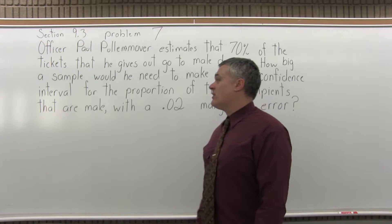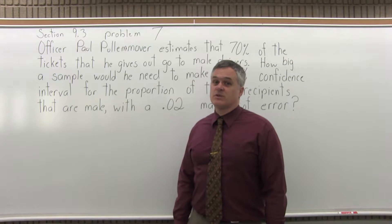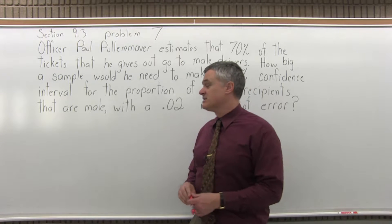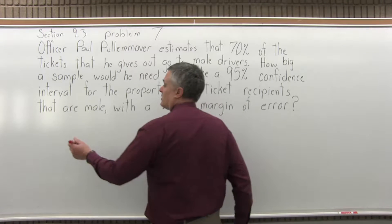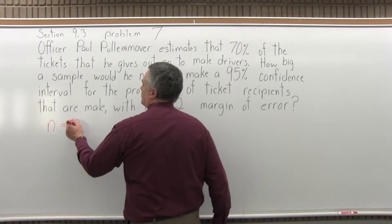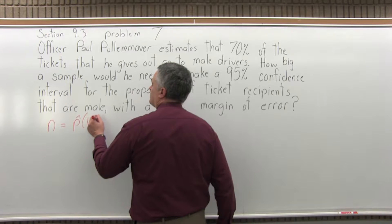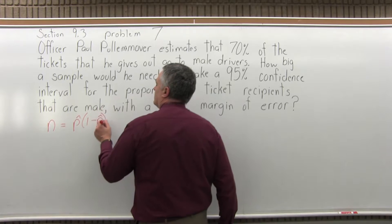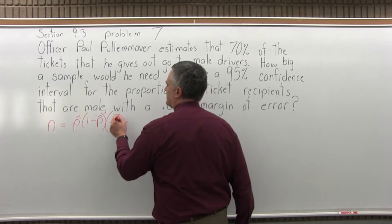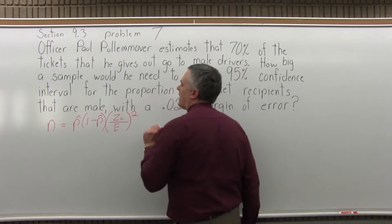This is a little different than the confidence interval questions we had been answering in this section. It's asking how big of a sample — determining the sample size. That's what it's looking for. There's a formula for that, which is n equals p-hat times 1 minus p-hat times z sub c over e, raised to the second power.